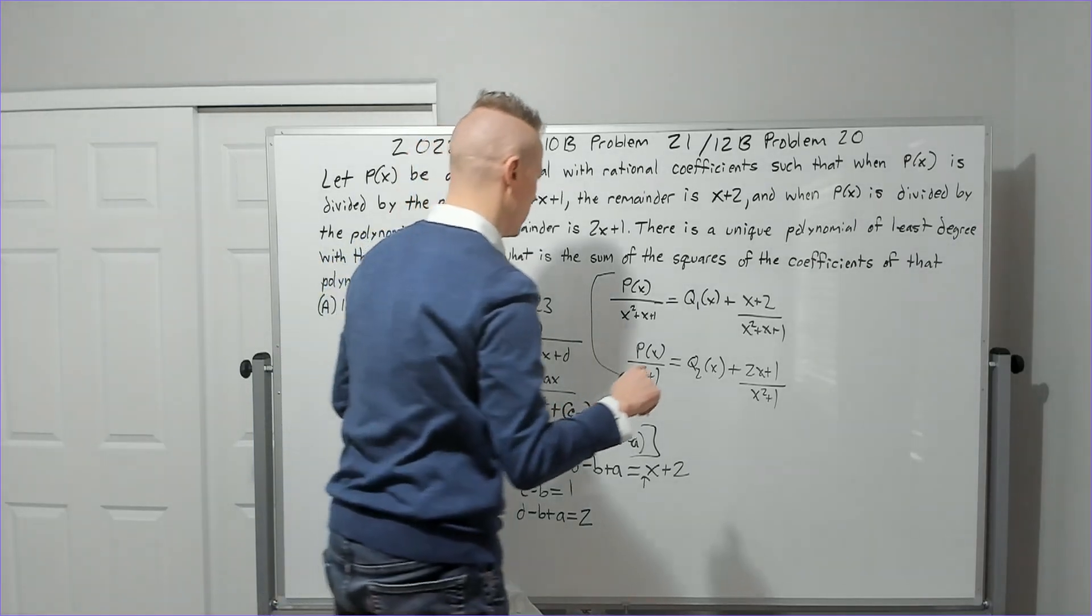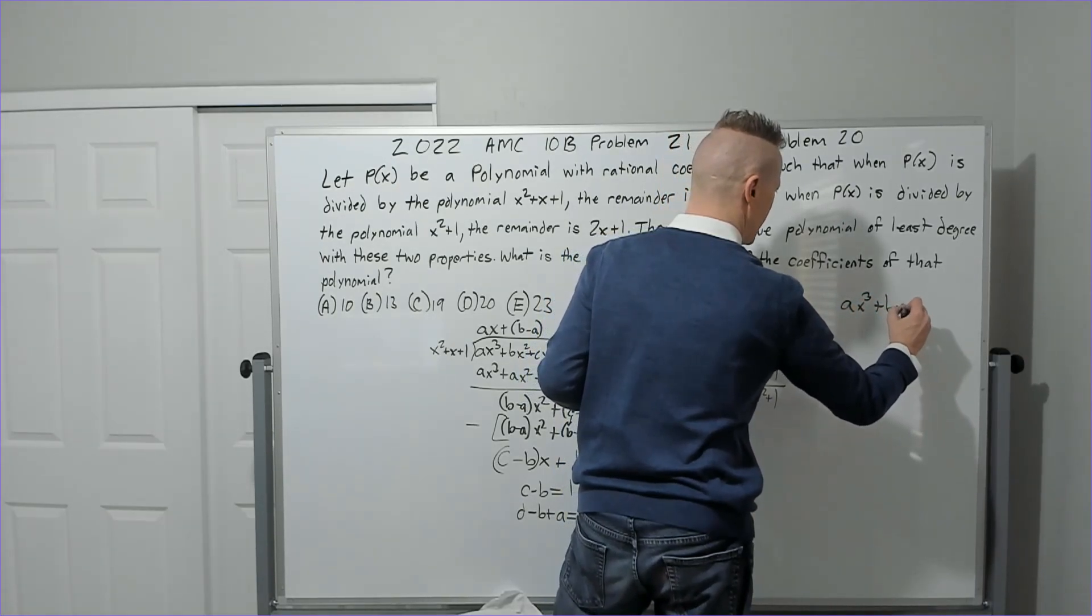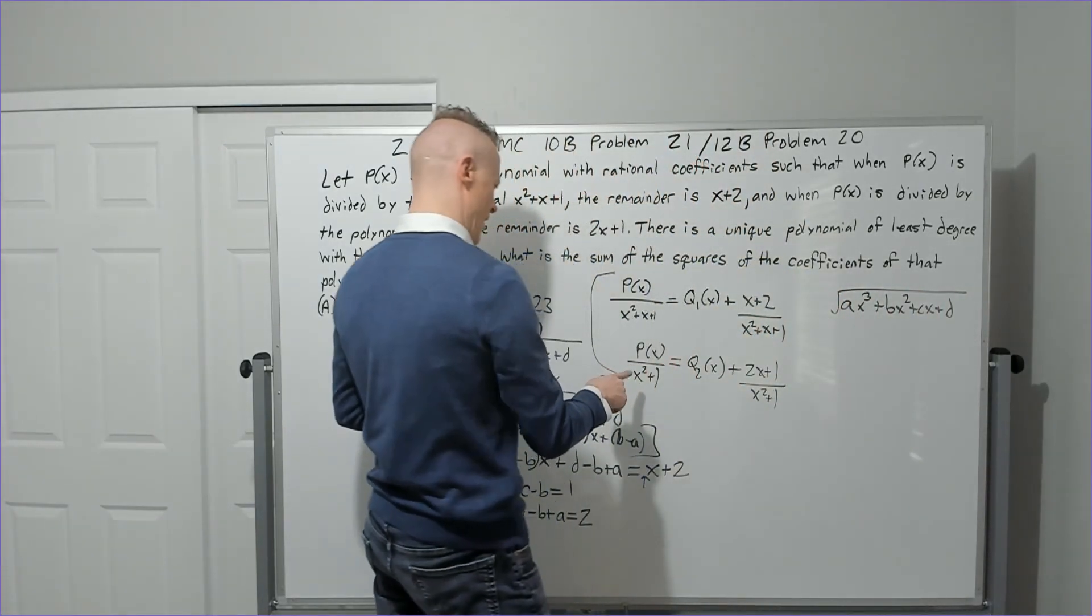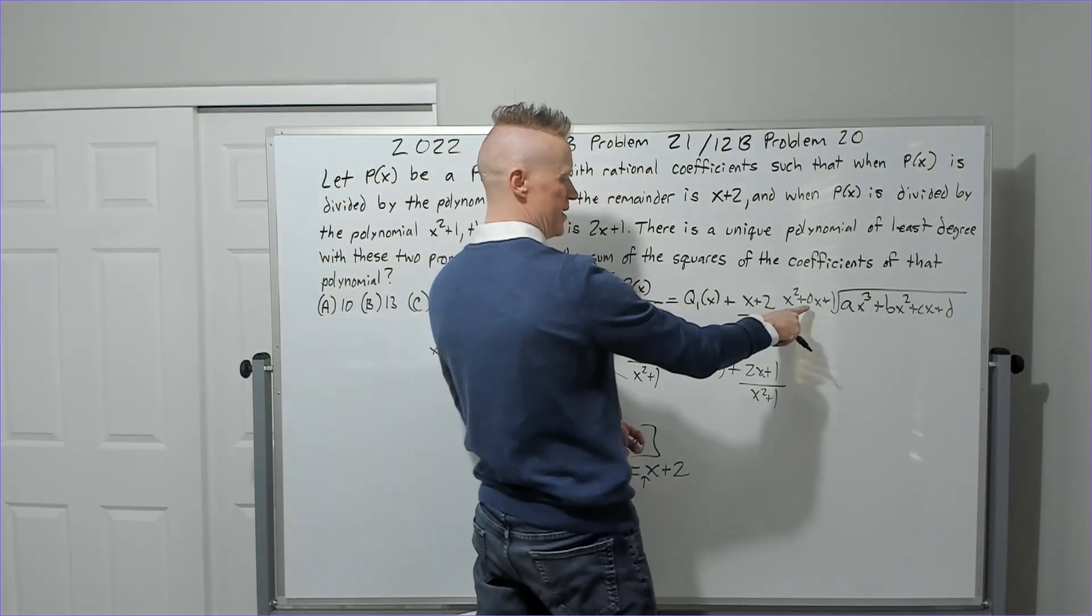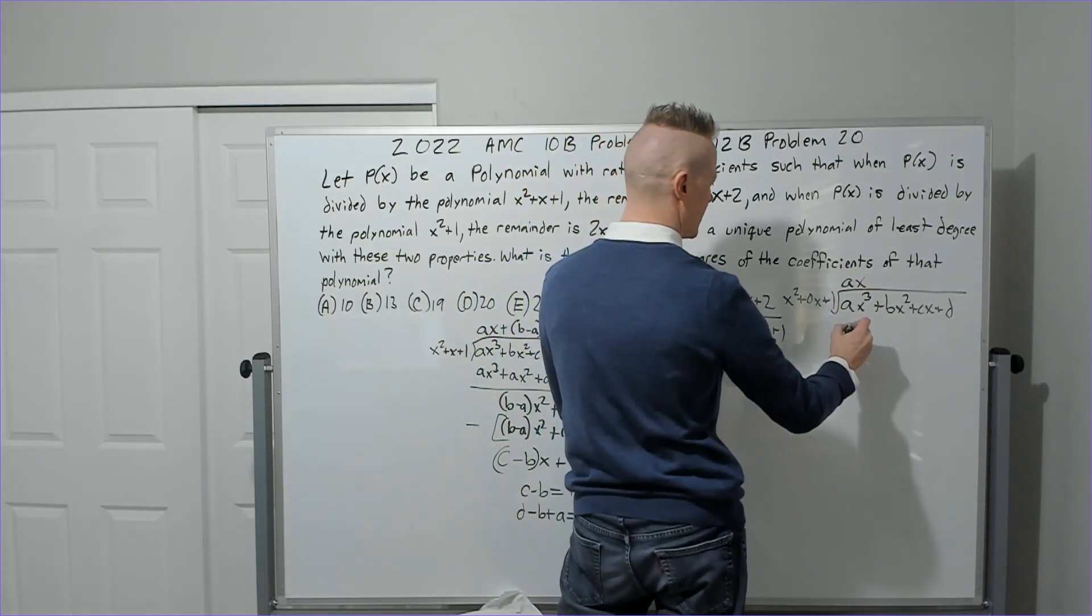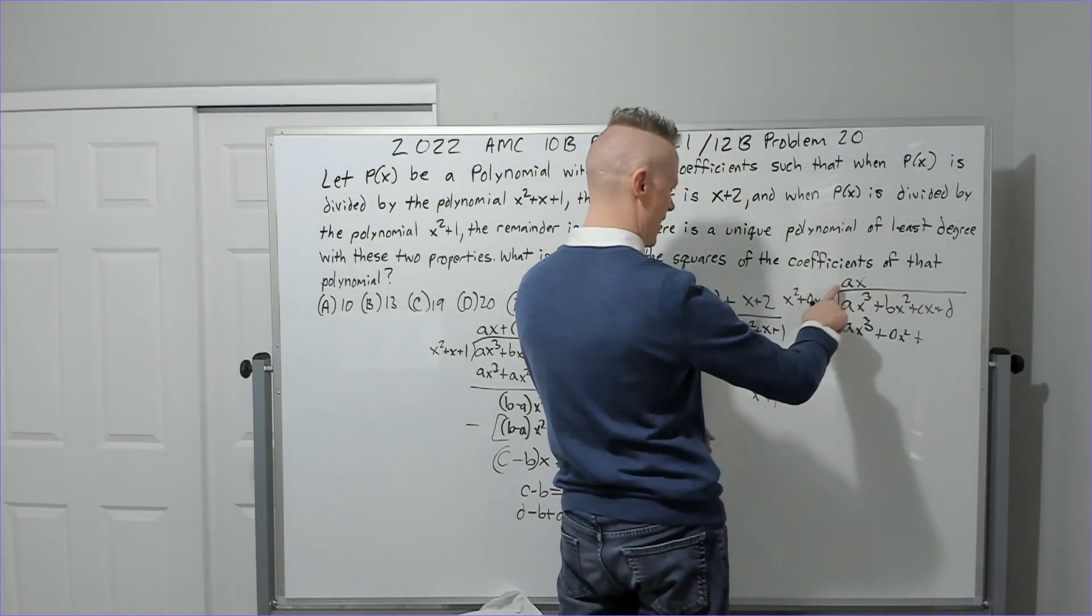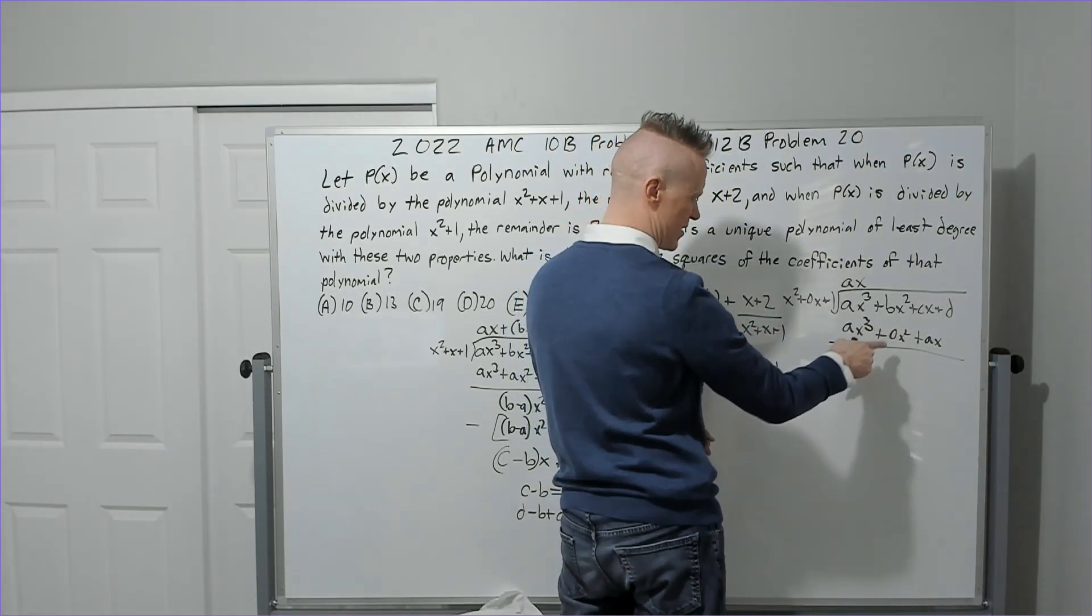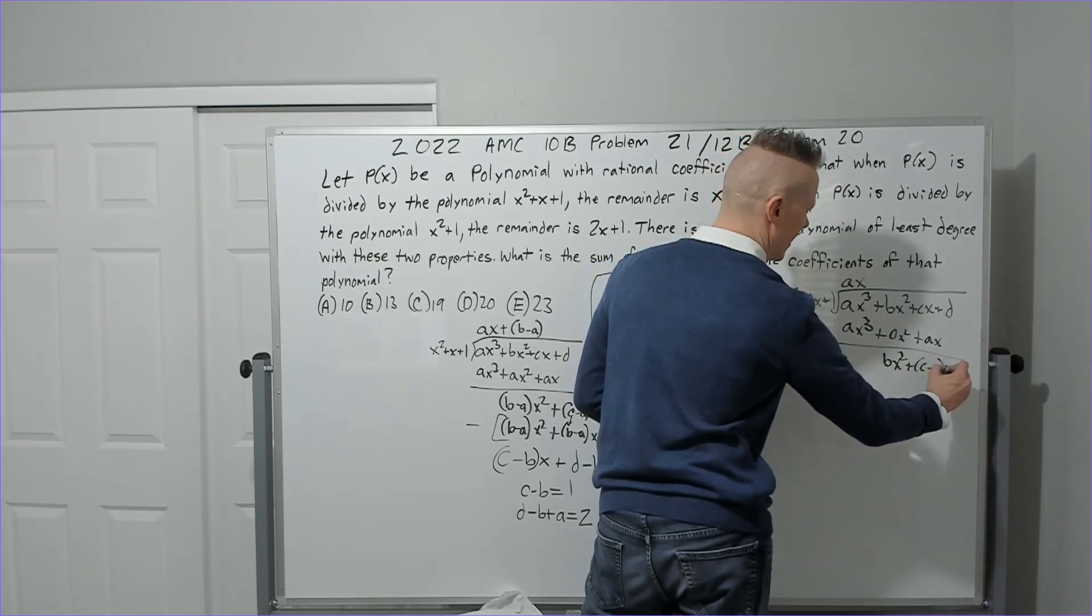Let's go ahead and do another one. We'll do this one now. Again, ax cubed plus bx squared plus cx plus d. And we're still dividing this time by x squared plus one. I'm going to write it this time with a zero placeholder term in the middle, 0x. x squared times what? Again, ax. Ax times this is ax cubed plus 0x squared plus ax. You're going to subtract this row from the top row. Subtract. It goes away.